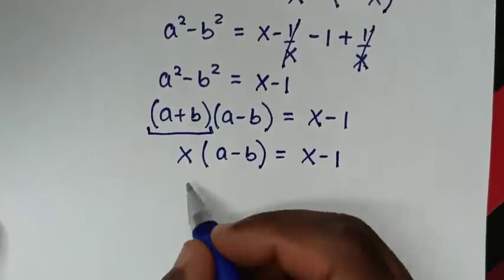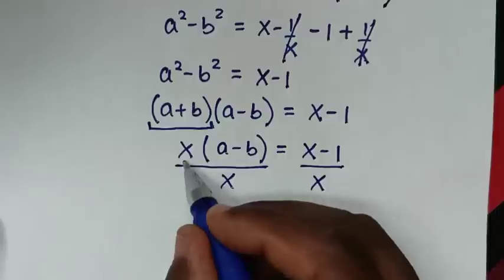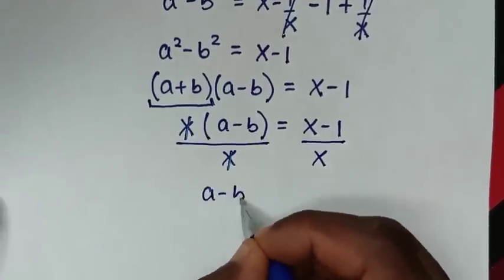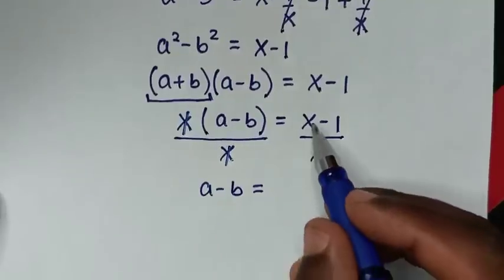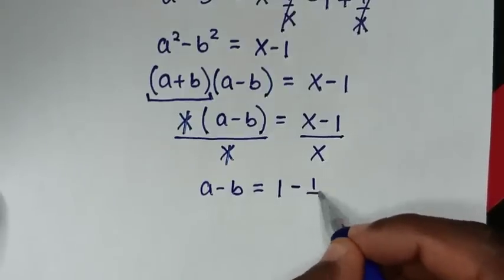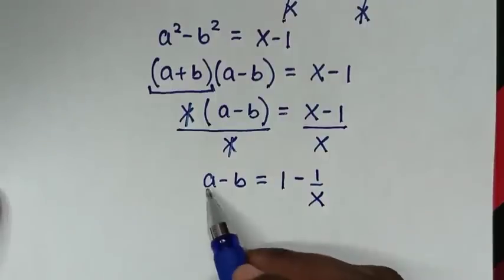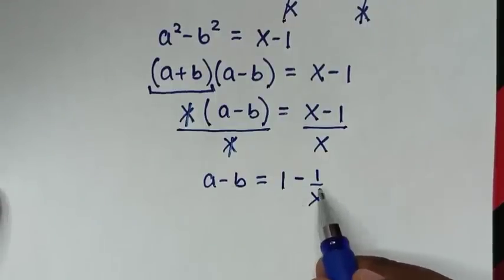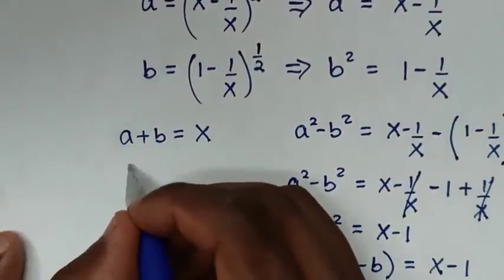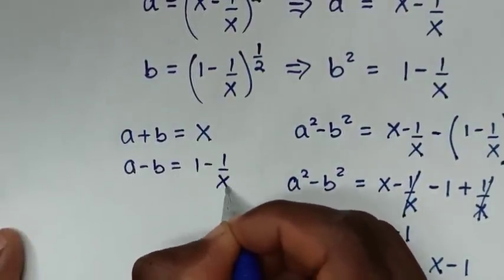We divide both sides by x, so this gives us a minus b is equal to 1 minus 1 over x. This is our second equation: a minus b equals 1 minus 1 over x.